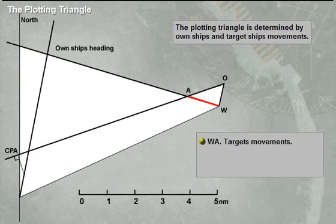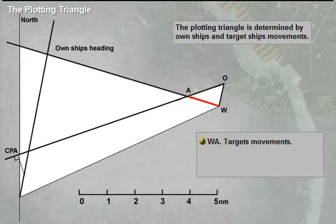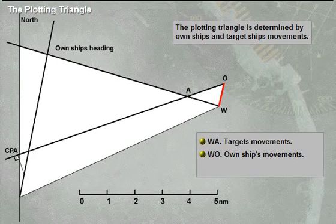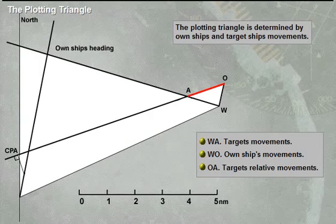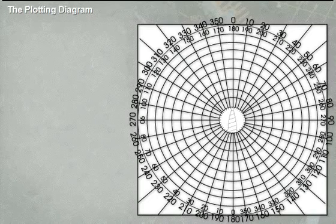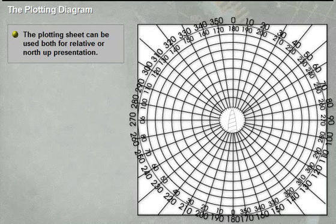To further explain the plotting triangle and its uses, both a true and relative plot have been illustrated here. The plotting triangle is determined by own ship's and target ship's movements.